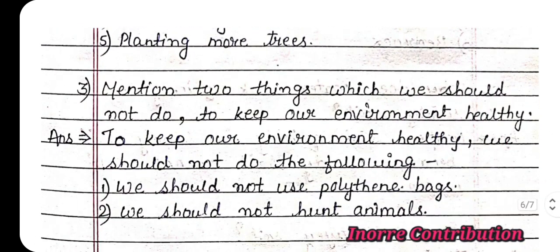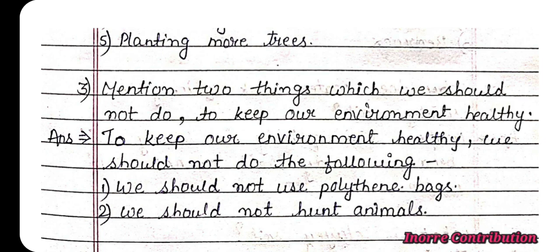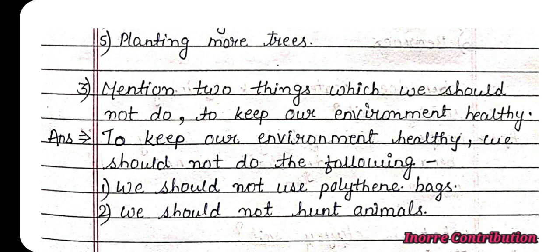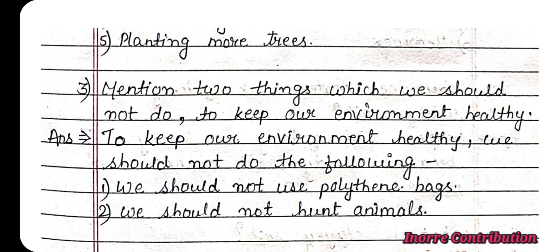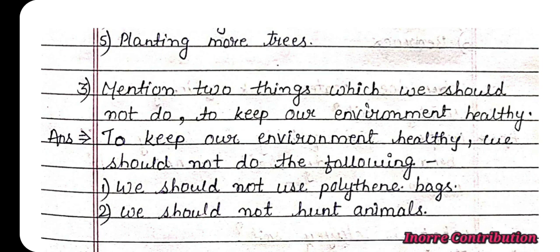Question three: Mention two things which we should not do to keep our environment healthy. Answer: To keep our environment healthy, we should not do the following: first, we should not use polythene bags; second, we should not hunt animals.